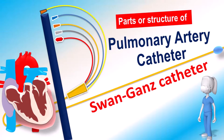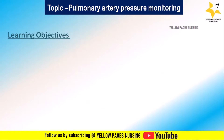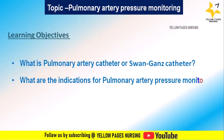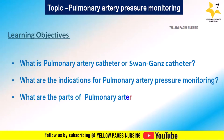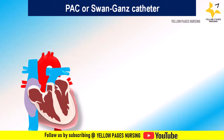Do not forget to hit the bell icon to receive instant notifications. The learning objectives we will be discussing in this session are: what is the pulmonary artery catheter or Swan-Ganz catheter, what are the indications for pulmonary artery pressure monitoring, and what are the parts of the pulmonary artery catheter and their functions.